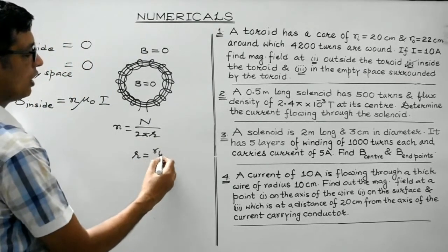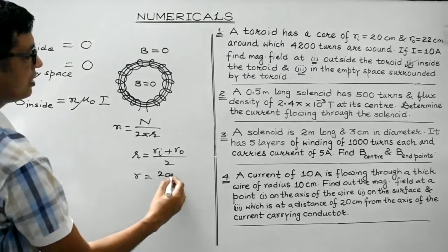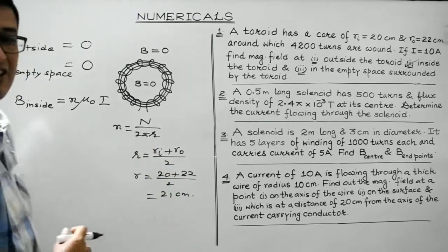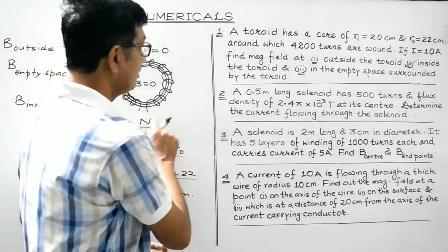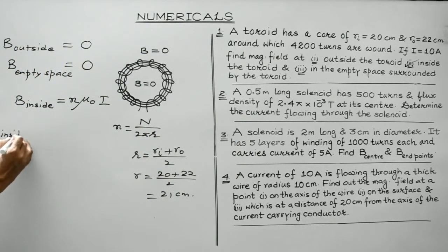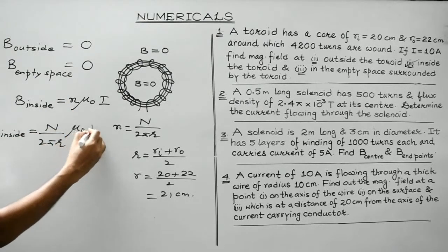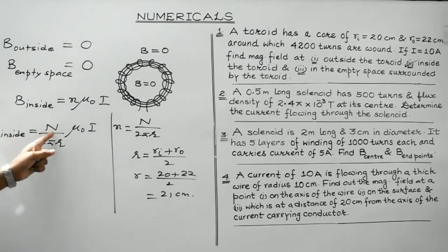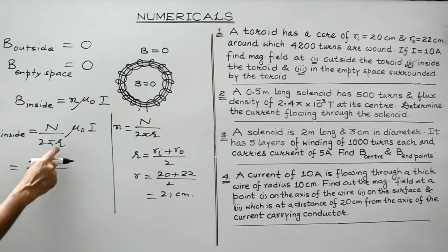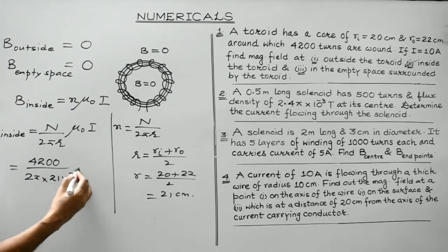So n equals N divided by 2πr, and when inner and outer radii are given, r is the mean radius: r = (r_i + r_o) / 2. The inner radius is 20 cm and outer radius is 22 cm, giving a mean radius of 21 cm. With N = 4200 turns, let's substitute the values. B = N / (2πr) × μ₀I, where 2πr uses the mean radius of 21 cm, which is 21 × 10⁻² meter.